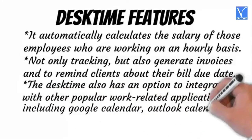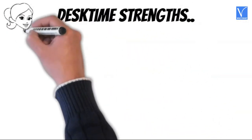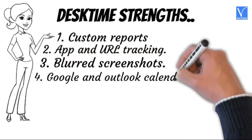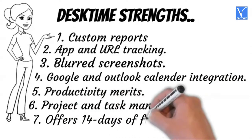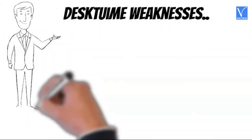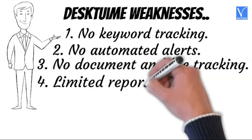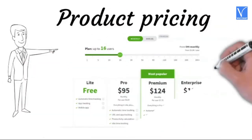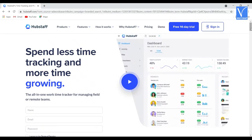DeskTime also has an option to integrate with other popular work-related applications including Google Calendar, Outlook Calendar, Trello, GitLab, Jira, Basecamp, etc. Strengths of DeskTime: custom reports, app and URL tracking, blurred screenshots, Google and Outlook calendar integration, productivity metrics, project and task management, and offers 14 days of free trial. Weaknesses of DeskTime: no keyword tracking, no automated alerts, no document and file tracking, limited reporting, only XLS export and no CSV. Price and plans are exhibited on the screen — check the description for the product link.